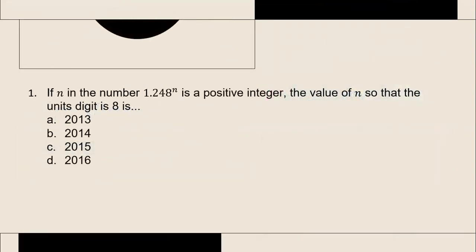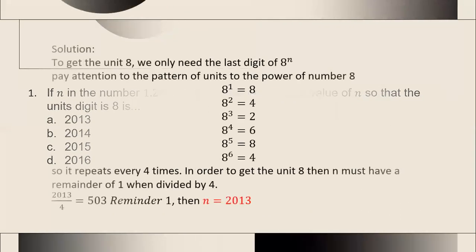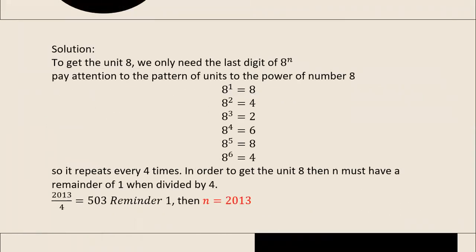Problem 1. If n in the number 1248 to the power of n is a positive integer, the value of n so that the unit digit is 8 is? To solve this problem, we only need the last digit of 8 to the power of n. So we have to pay attention to the pattern of the unit digit of powers of 8. From the pattern, we conclude that the unit digit is repeated every 4 times.